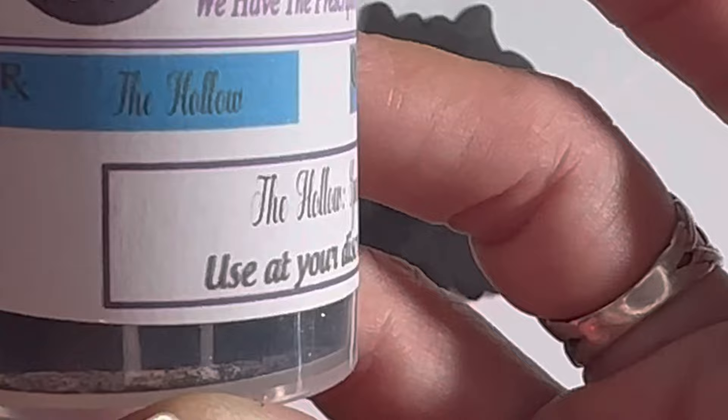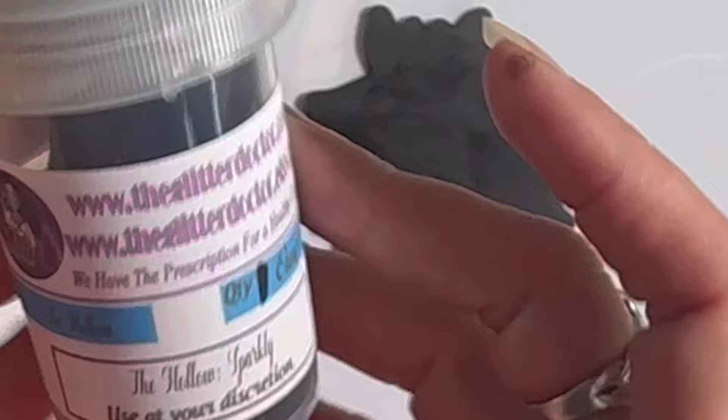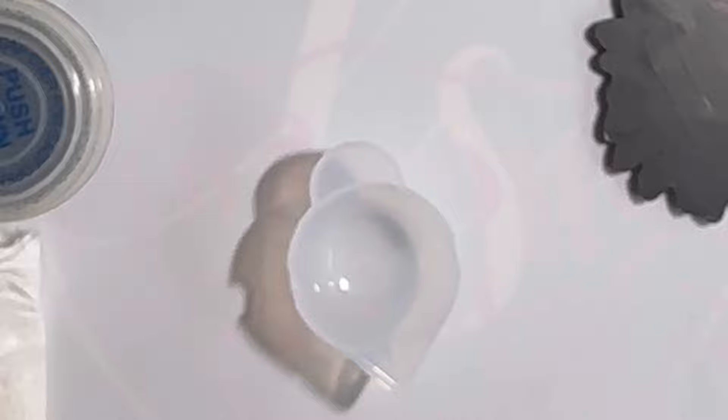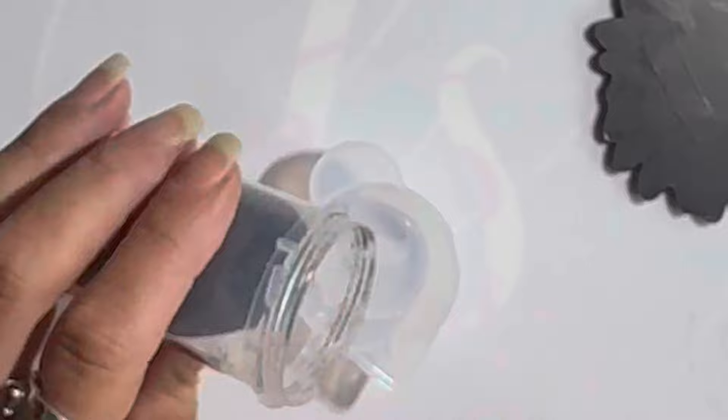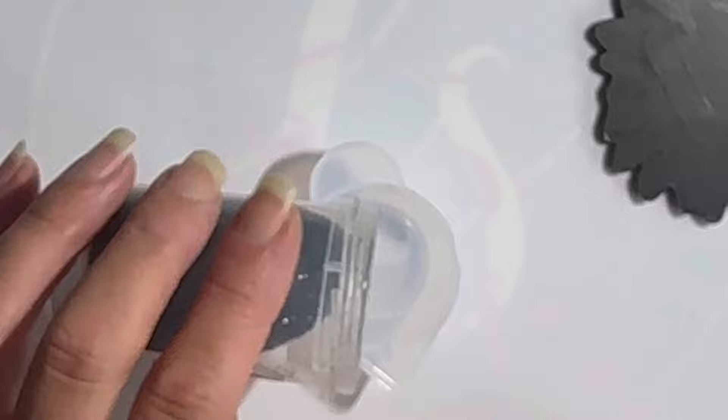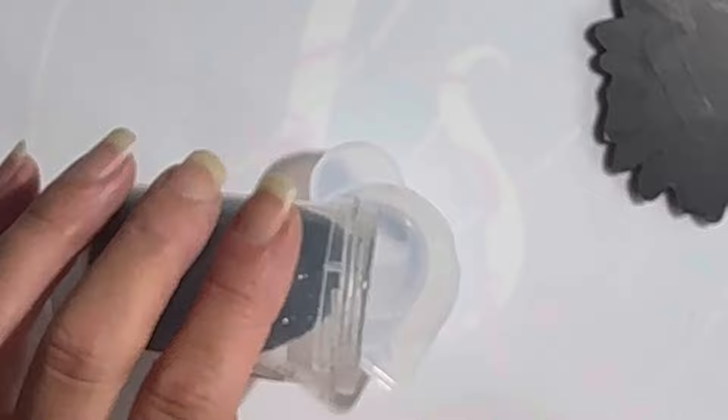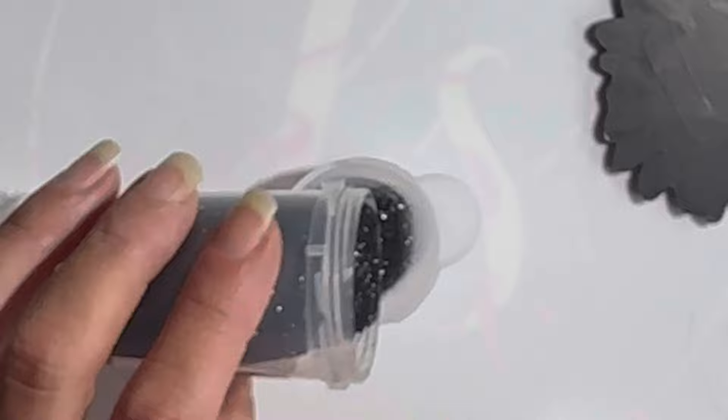Then we're going to use the Halo from the Glitter Doctor and mix this with some of the UV resin, just the same as the green. Get some put in there.